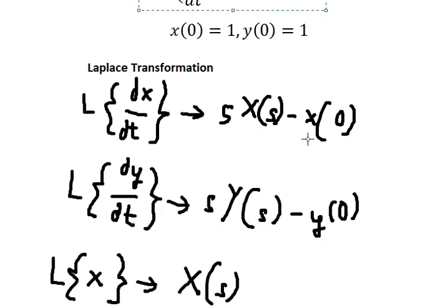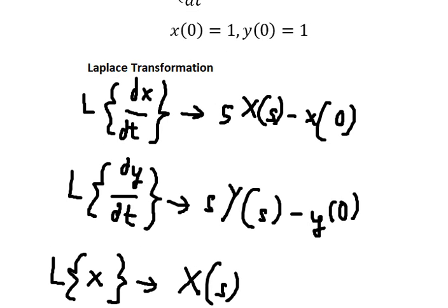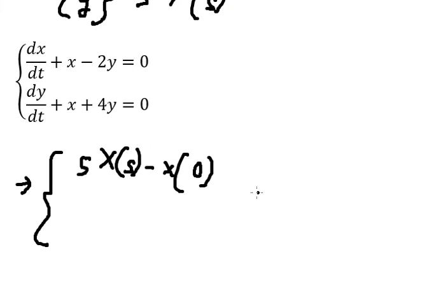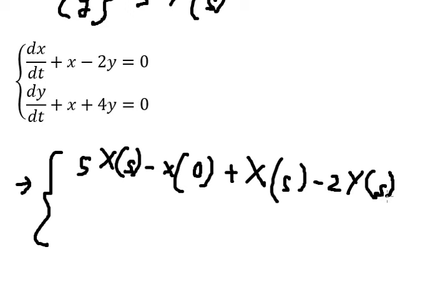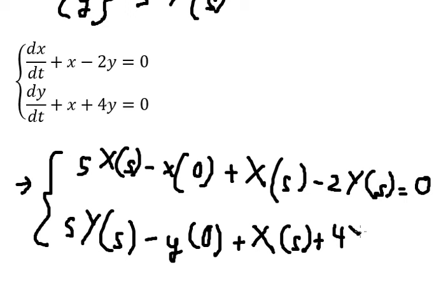Now we have this equation, so we need to convert it into Laplace form. That should give us: negative 2·Y(s), then s·Y(s) minus y(0), and we have capital S(s) plus 4·Y(s).